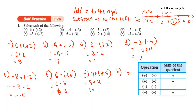10: Negative 5 minus negative 3. Negative and negative, you get positive. So negative 5 plus 3, you get negative 2.